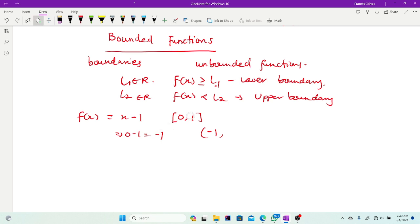So meaning that the range of my function will surely start from negative 1. Then when I put 1 inside, I'll get 0. So meaning that my function can never exceed negative 1 on the left side. Negative 1 happens to be the lowest possible number our function can go. So therefore, we can say that our function has a lower boundary of negative 1 and our function can never exceed 0 because this is the interval which we are dealing with.